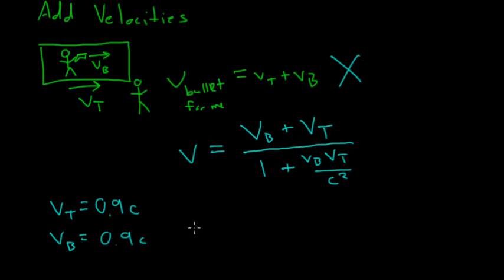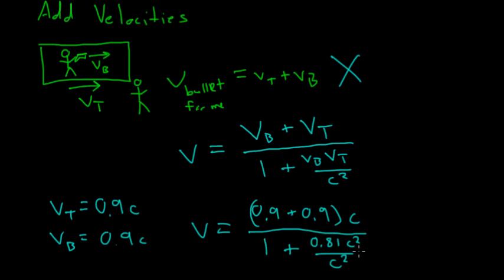If I look at this, this is going to give me 0.9 plus 0.9 times c for the velocity of the bullet plus the velocity of the train over 1 plus 0.9 times 0.9 is 0.81 times c over c squared, and these just cancel each other out. So that's going to give me, in the numerator, I have 1.8.